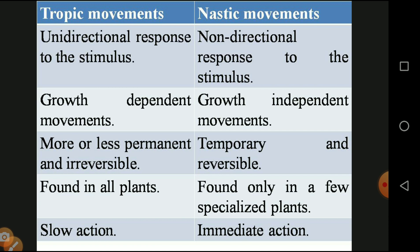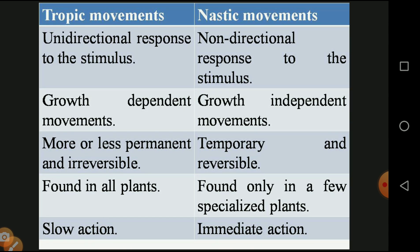Now we will differentiate between tropic movement and nasty movement. First, tropism is unidirectional while nasty movement is non-directional. Second, tropism is growth-dependent while nasty movement is growth-independent. Third, tropic movement is more or less irreversible while nasty movement is temporary and reversible. Fourth, tropic movement is available in all plants, but nasty movement is available only in special types of plants. Fifth, tropic movement is a slow process while nasty movement is an immediate response — when you touch the plant it closes immediately.